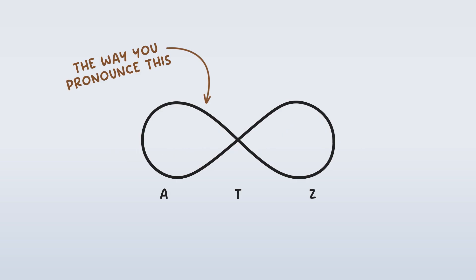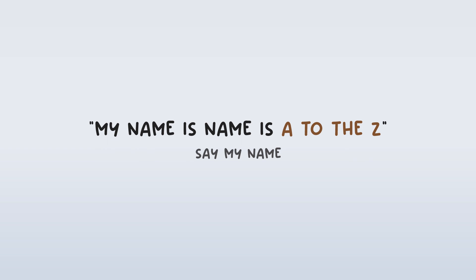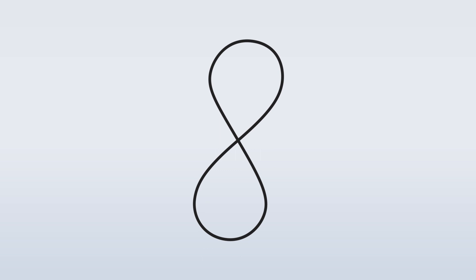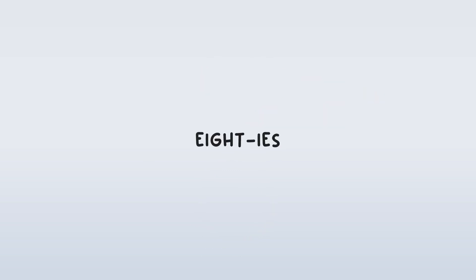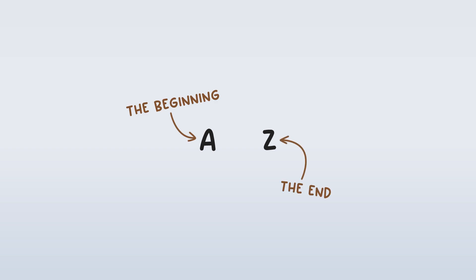ATZ's name is basically like the way you pronounce this shape. In the lyrics of 'Say My Name,' they say that their name is A to the Z, which is quite fun since 'to' and 'the' are also both words that start with T. Additionally, this shape is a figure eight, so you can also think of it like their name is eight E's, hinting to the fact that there are eight members. The letters A and Z are the letters at the beginning and the end of the alphabet, and they're placed at the beginning and the end of ATZ's name. So within their name, we get this coupling of the beginning and the end.